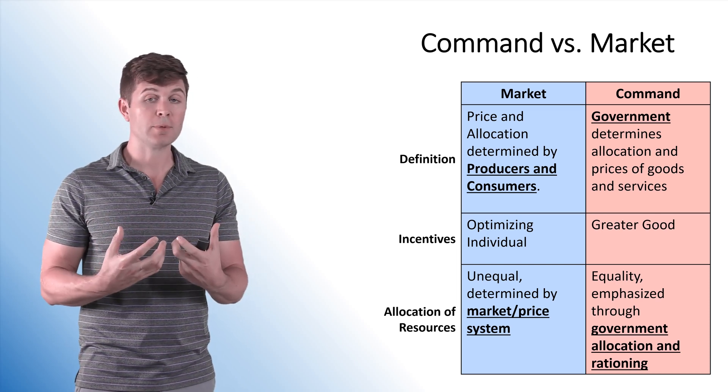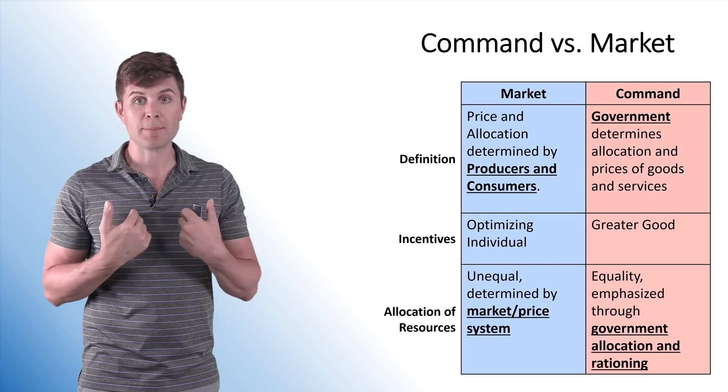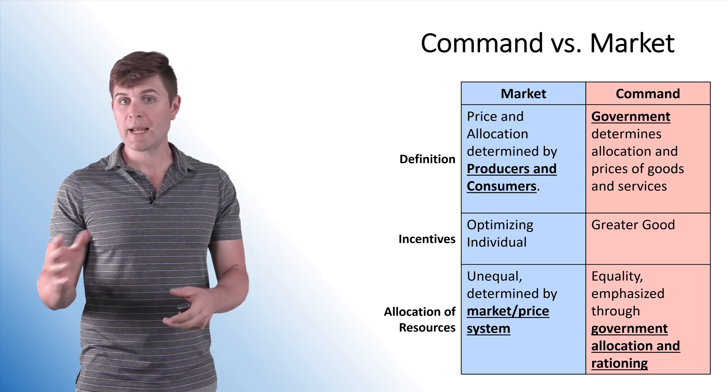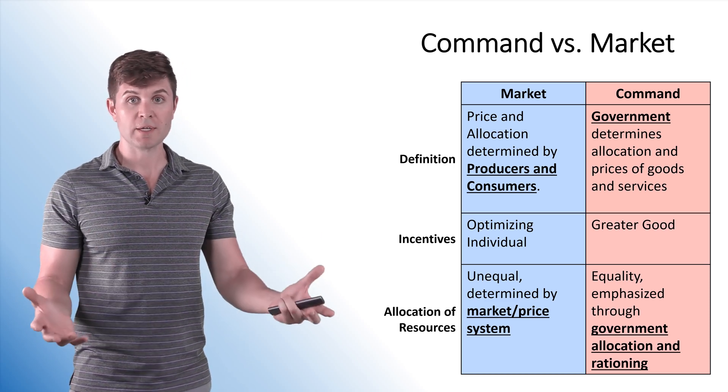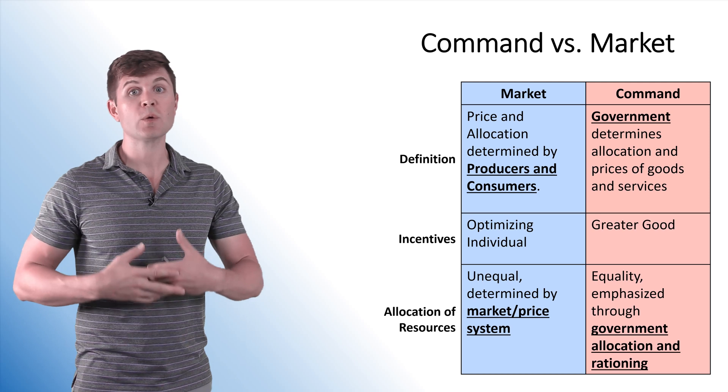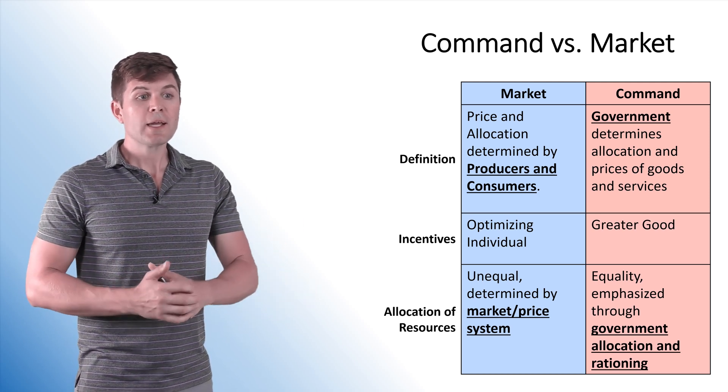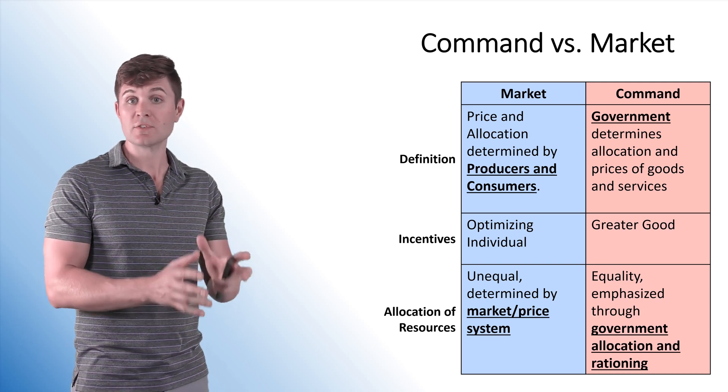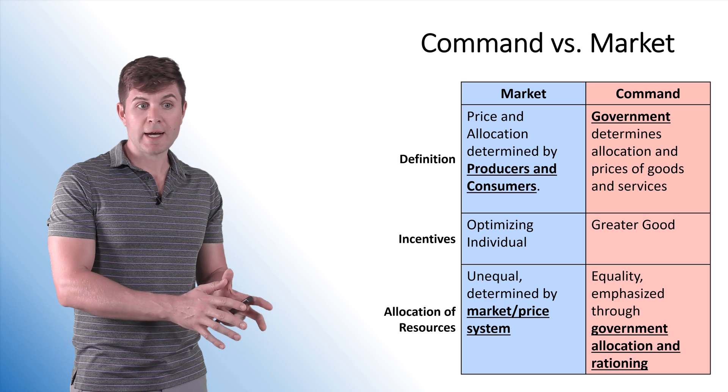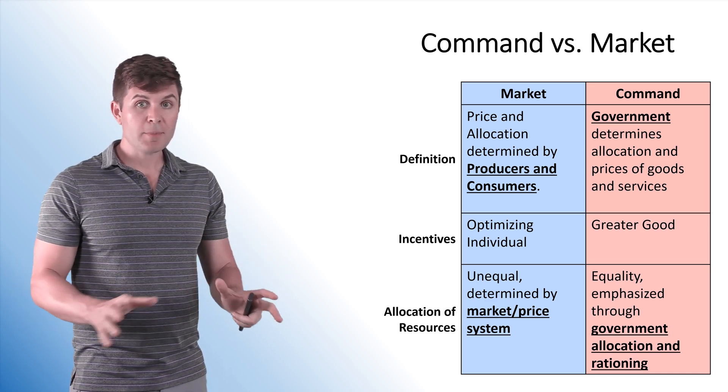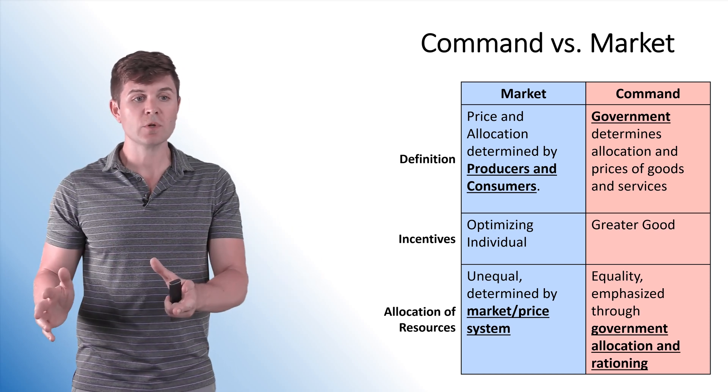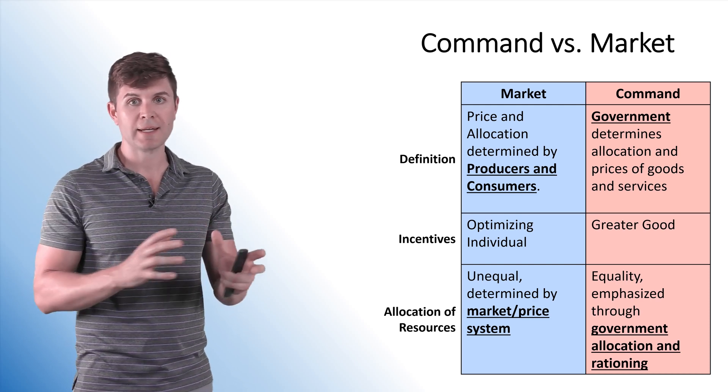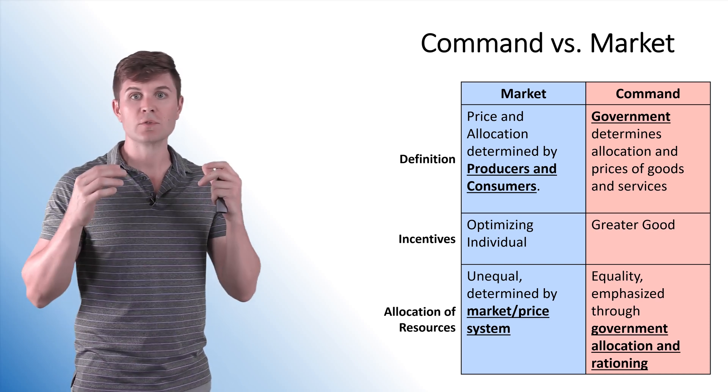Now, the incentive structure is really the problem with a command economy. Because in a market economy, we know that everybody's an optimizing individual, and everybody's working in their own best interest. And because of that, the invisible hand kind of guides everything to where it needs to be. In a command economy, the incentive structure is based upon the greater good of the economy or of the society. Everybody's doing what they can to make everybody else better off. The allocation of resources in a market economy is not equal. It's unequal. It's determined by that price system or the market itself. So in a command economy, equality is emphasized. The government decides who's going to get what. So the government allocates the resources. And quite often, they do that through a rationing system. They might manipulate prices depending on how extreme this command economy is, or issue ration coupons or just some sort of distribution.